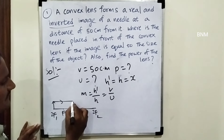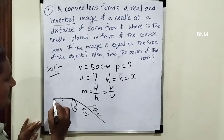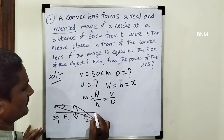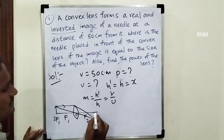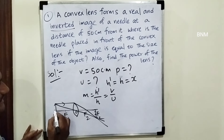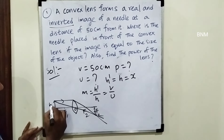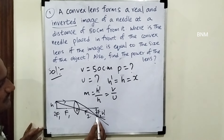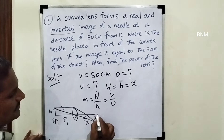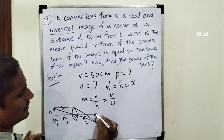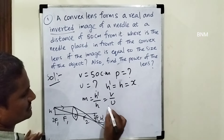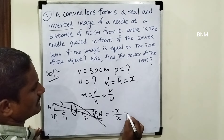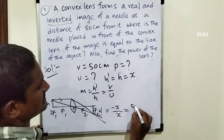The principal axis, rays parallel to the axis pass through the focus on the second side. The object height h and image height h-dash are equal, and the image is below the principal axis, giving a magnification of minus x equal to x.